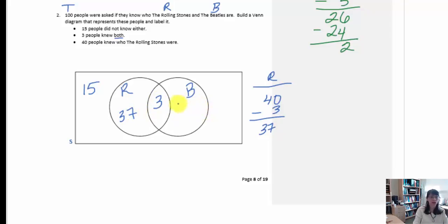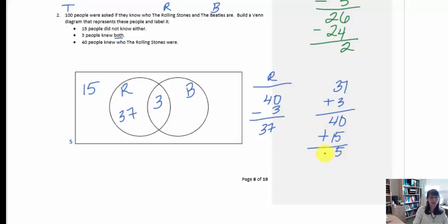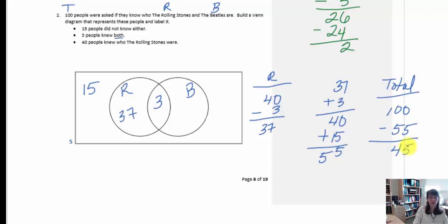To figure out if there are more people to place in the Beatles event, we add up the numbers so far: 37 plus 3 makes 40, plus the 15 out in the universe gives 55. Our total is 100 people, so we subtract 55 from 100, which leaves 45. So we need 45 more in the event for knowing the Beatles. When we add 45 plus 3 plus 37 plus 15 we get the total of 100 people, confirming the Venn diagram is complete.